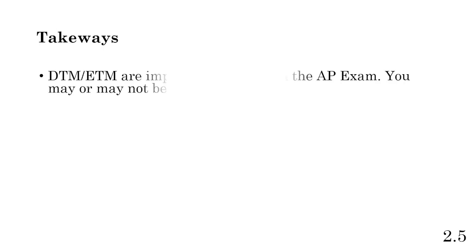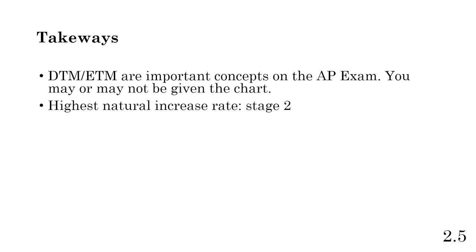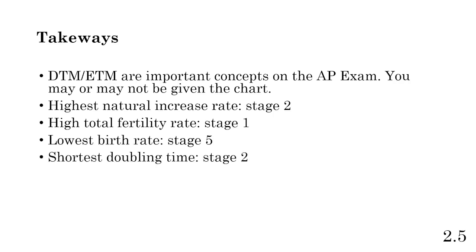Takeaways from this FRQ: the DTM and ETM are important concepts on the AP exam, and you will likely be given the DTM chart if asked about it directly. The highest total fertility rate is in Stage 1, as we saw in Part A. The highest natural increase rate is actually in Stage 2 — because birth rates are still very high while death rates are exponentially decreasing. The shortest doubling time is in Stage 2, correlated with the highest natural increase rate.